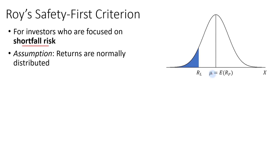From this graph, we have the mean return mu, denoted as the expected return on the portfolio P. To the left we have R sub L, the investor's minimum acceptable return. Anything below this minimum acceptable return will make the investor uncomfortable. The area shaded in blue represents the shortfall risk — the probability that the portfolio return will be lower than the minimum acceptable return within that time horizon. The variable X represents the return of the portfolio.